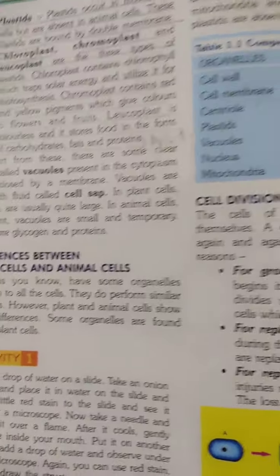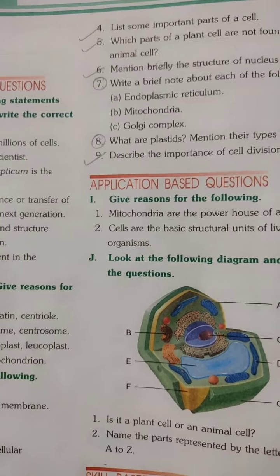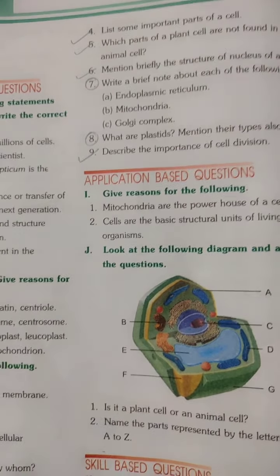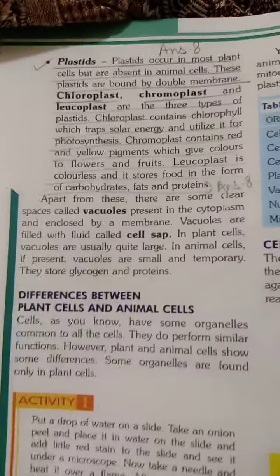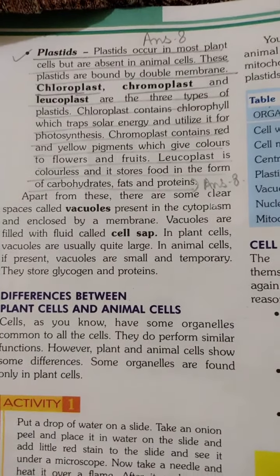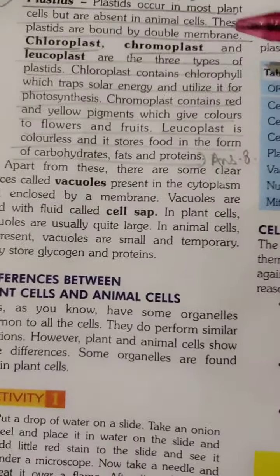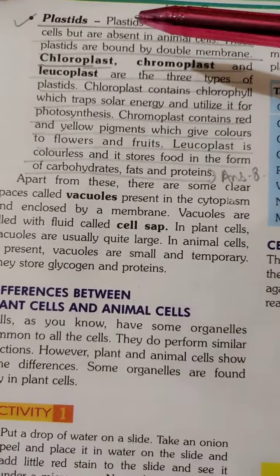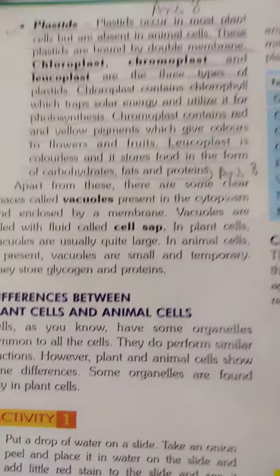And answer number 8: what are plastids? Mention their types. It is written on page number 10. From plastids — most occur in plants — till here, and from plastids till fats and protein is answer number 8.